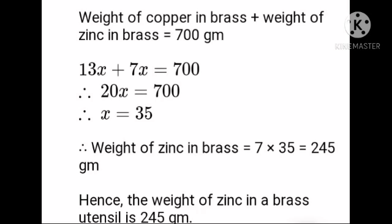Weight of copper in brass plus weight of zinc in brass is equal to 700 grams. Therefore, 13x plus 7x is equal to 700. 13 plus 7 becomes 20, so 20x is equal to 700. Therefore, x is equal to 700 upon 20 is equal to 35. Therefore, weight of zinc in brass is equal to 7 into 35 is equal to 245 grams. Hence, the weight of zinc in the brass utensil is 245 grams.